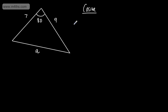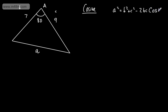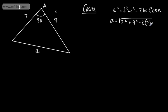The cosine rule for a missing length gives us A squared equals B squared plus C squared minus 2BC·cos A, and this is given in formula books. So A will be equal to the square root of B squared plus C squared minus 2BC·cos A. Substituting in our values: the square root of 7 squared plus 9 squared minus 2 times 7 times 9 times the cosine of 80 degrees. We put this through the calculator — make sure it's opposite the enclosed angle.